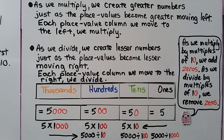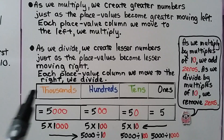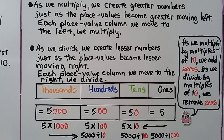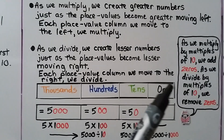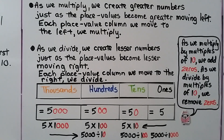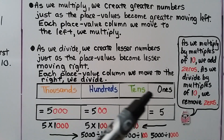As we multiply, we create greater numbers, just as place values become greater moving left — each place value column we move to the left, we multiply. As we divide, we create lesser numbers, just as place values become lesser moving right — each place value column we move to the right, we divide.